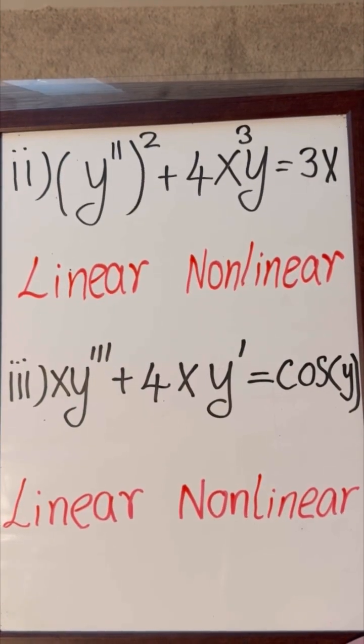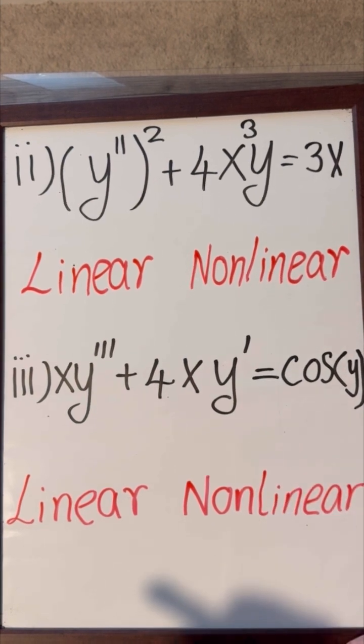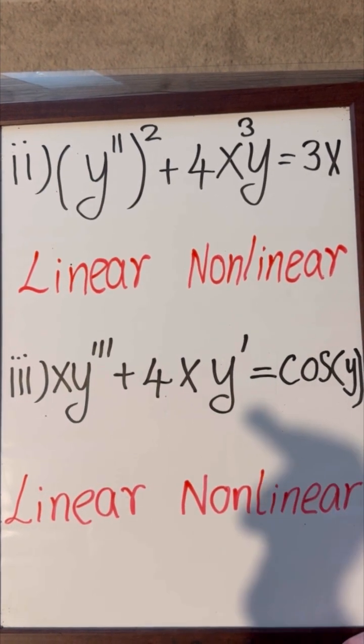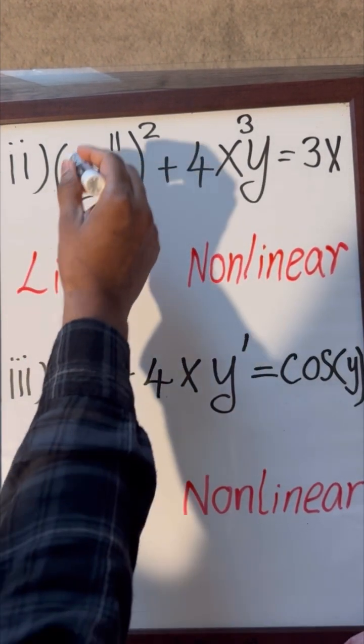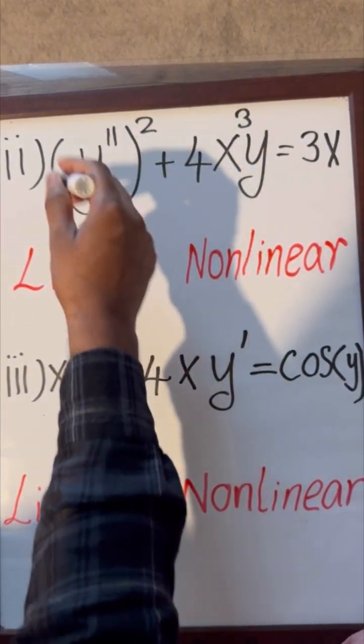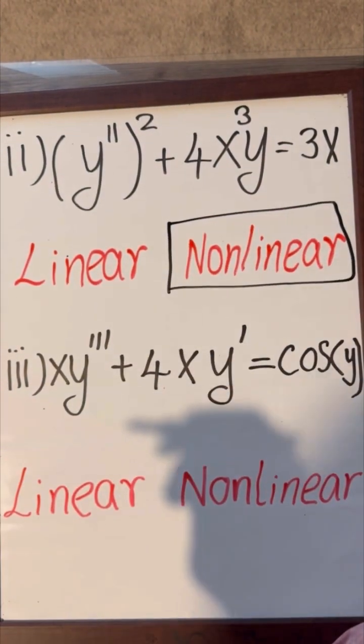Let's consider the second example. Y double prime squared plus 4x cubed y equals 3x. This is also a nonlinear differential equation because we have the power of the derivative term. That is the reason why it becomes nonlinear.